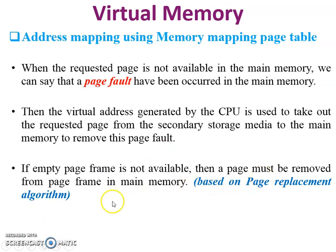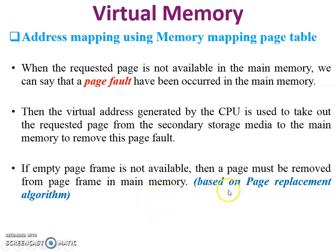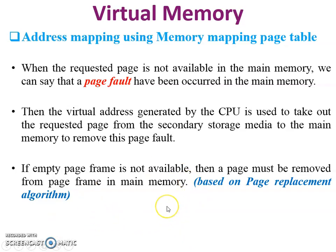If an empty page frame is not available — meaning main memory is full — a page must be removed from a page frame in main memory. The page from secondary memory replaces one of the pages in main memory, based on a page replacement algorithm.